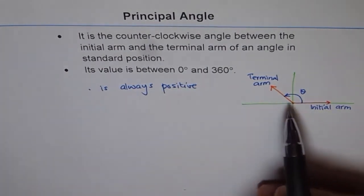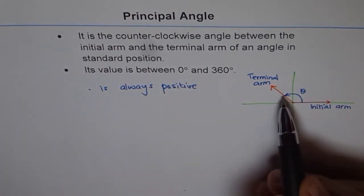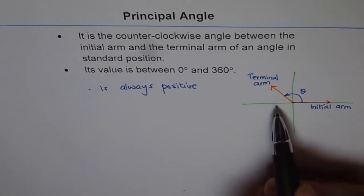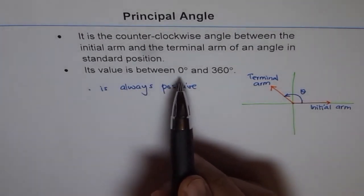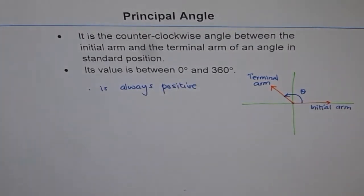Second is, what could be its value? Its value could be from 0 to 360. Once you make the second rotation, it again starts from 0, again goes from 0 to 360. So its value is always between 0 to 360 degrees. That is principal angle.